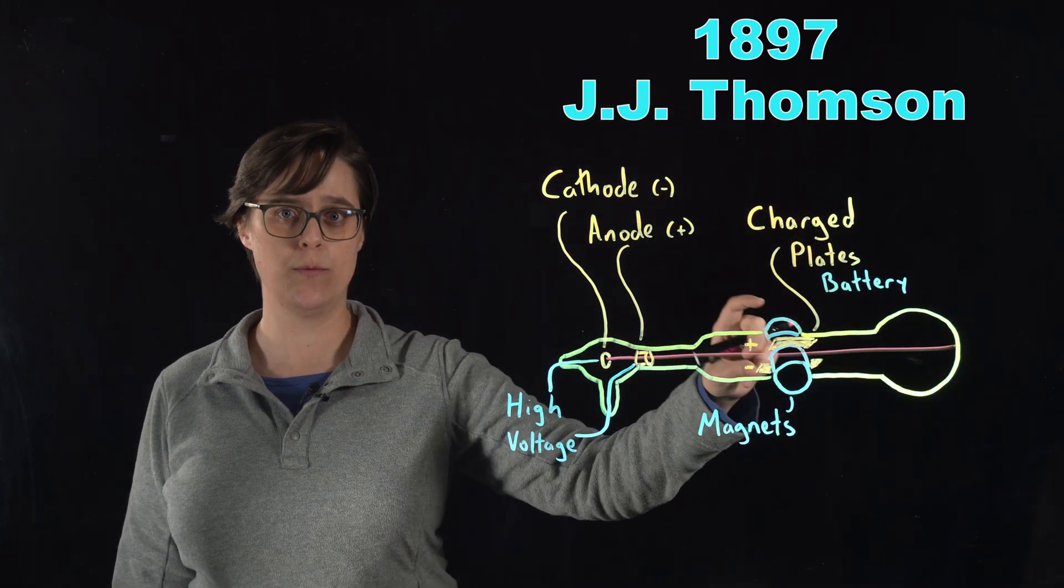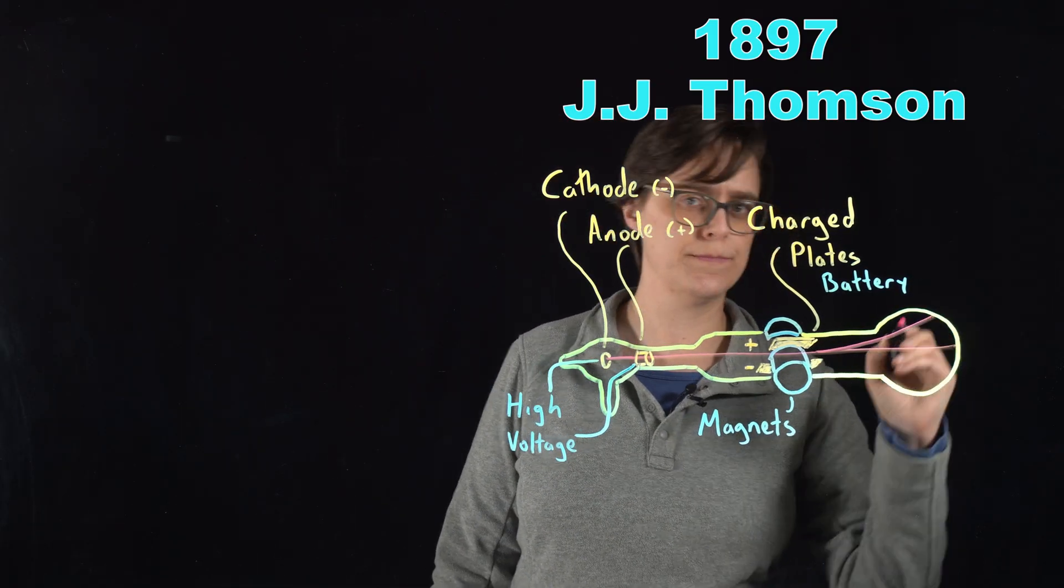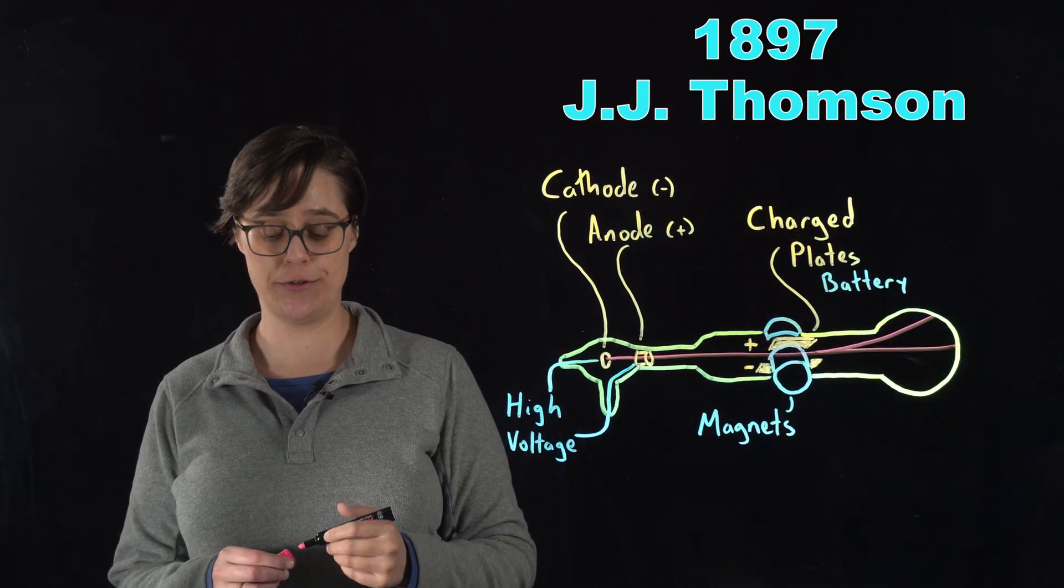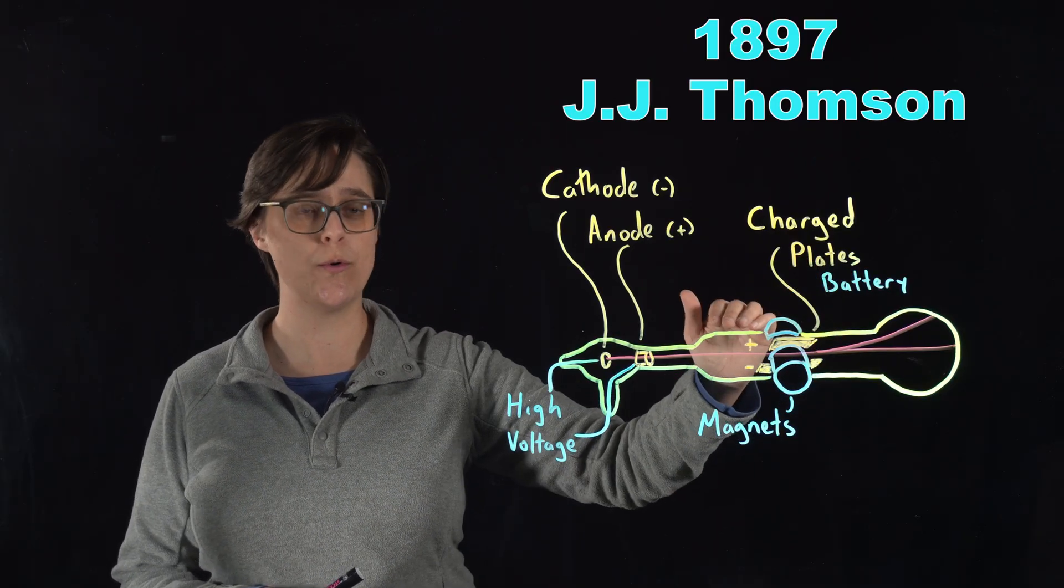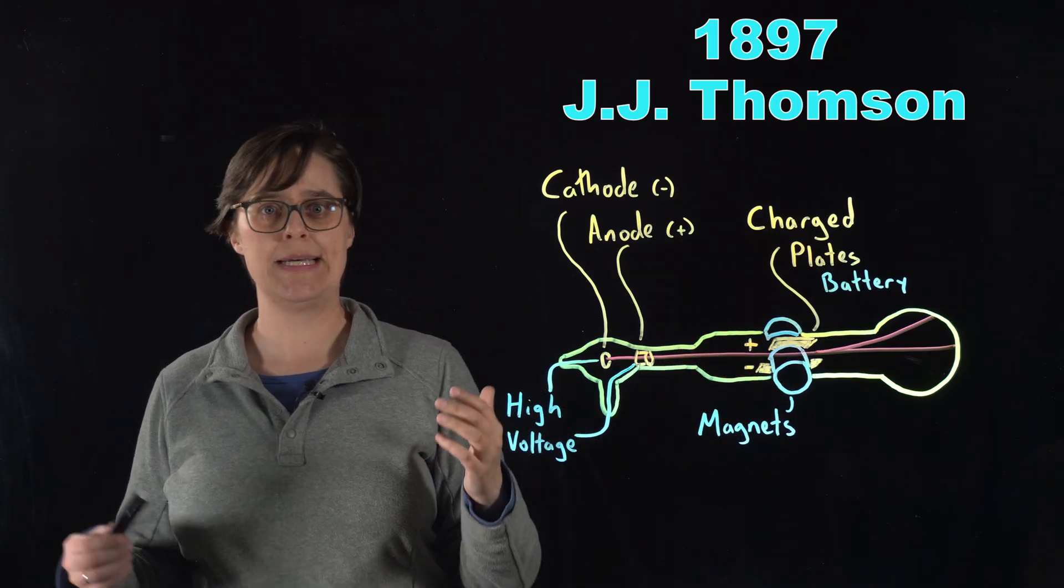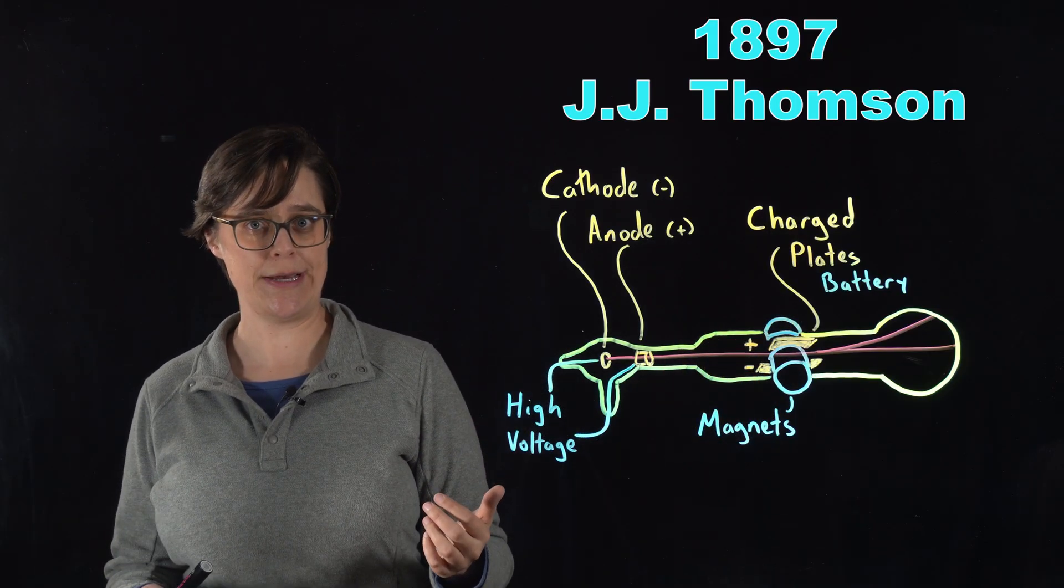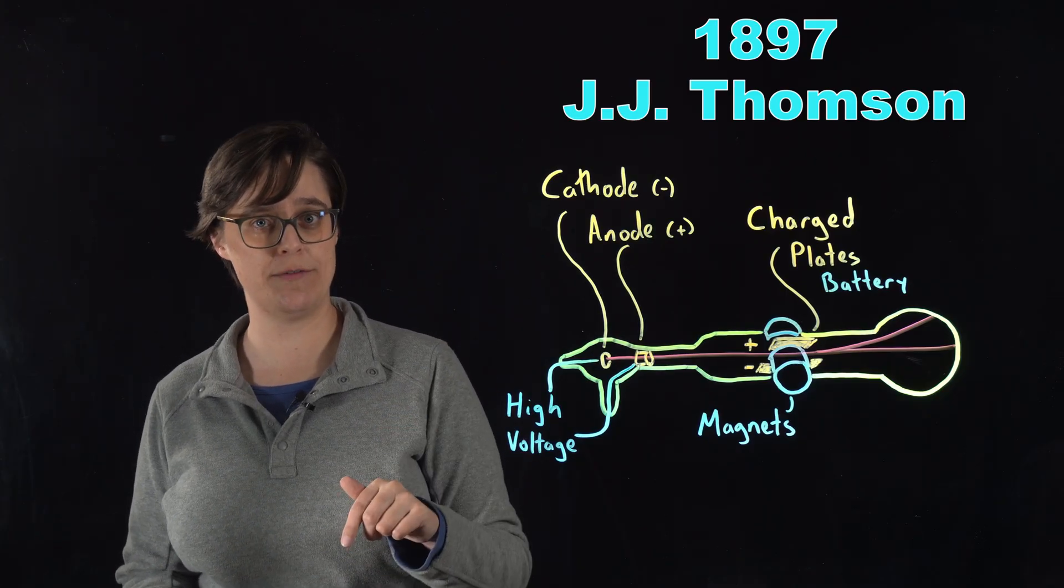When magnets were applied to this beam, the beam was deflected. It changed trajectories. Specifically, the beam was deflected towards the positive plate and away from the negative plate. Given that opposites attract, these cathode rays must be negatively charged.